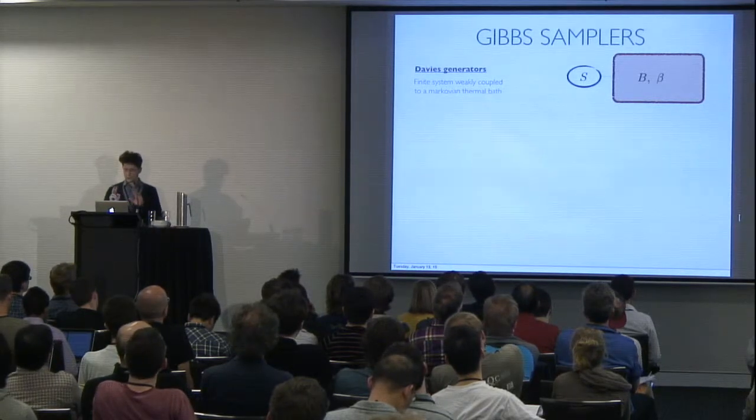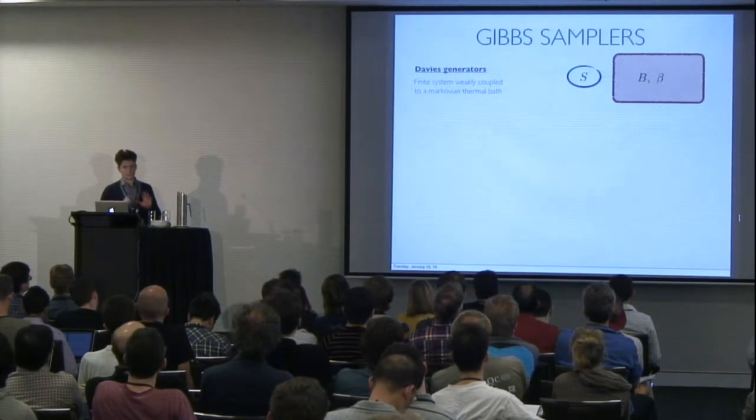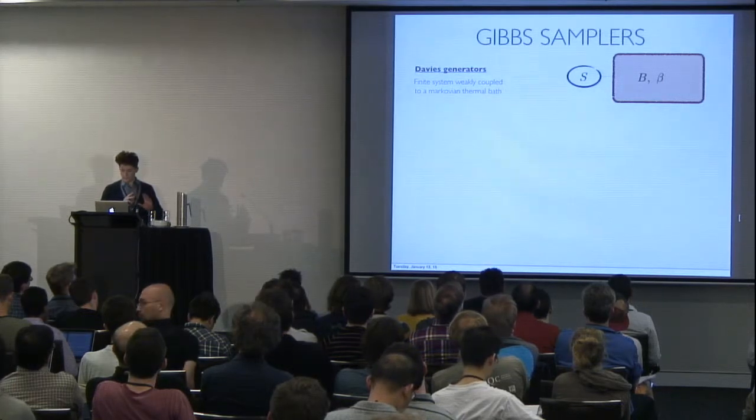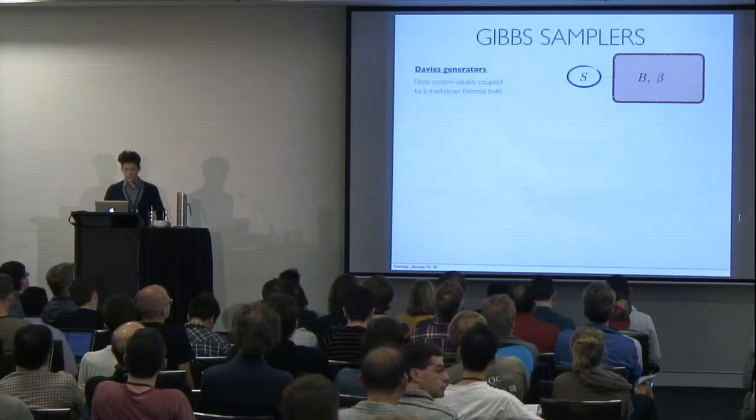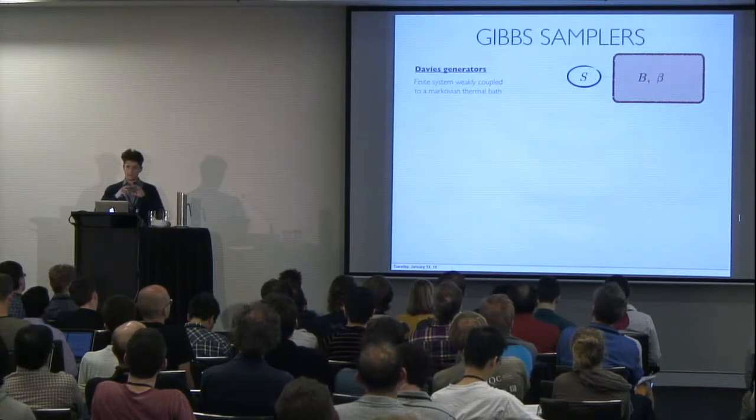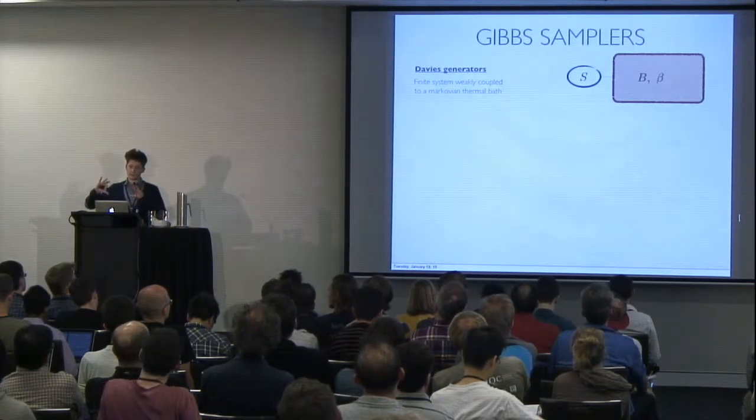So I'm going to introduce two different types of Gibbs samplers. The first is inspired more by what actually happens in nature, and this often goes under the name of Davies generator.